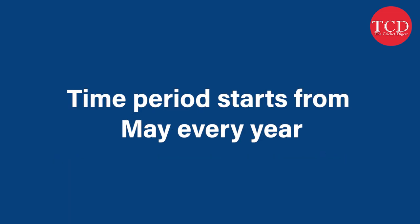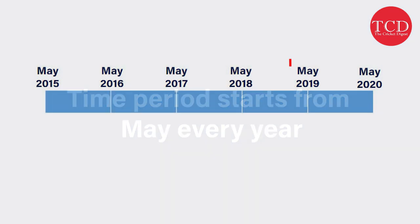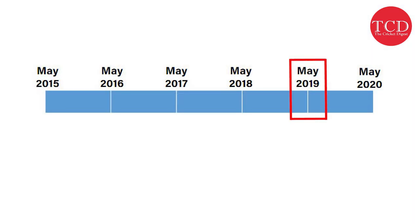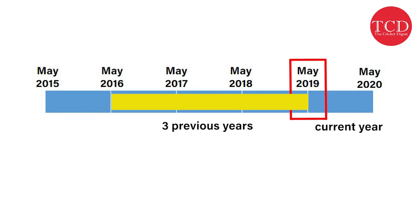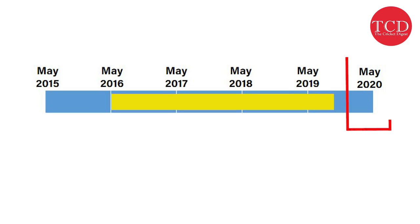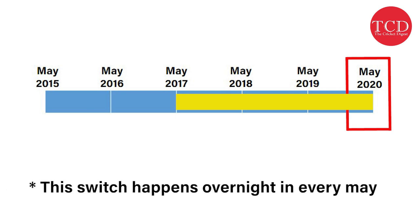This period is considered from May every year. For example, in May 2019, the matches played after May 2016 will be considered for the calculation. In May 2020, matches from May 2016 to May 2017 will be dropped. This drop happens overnight in May every year, and a team's ranking might suddenly change even though they have not played any matches recently.